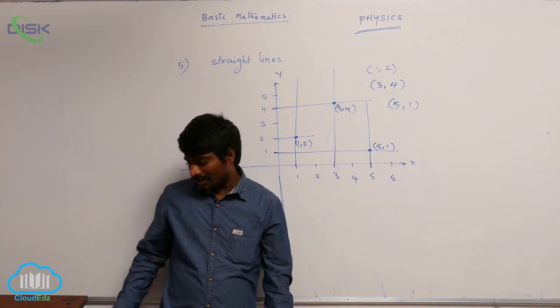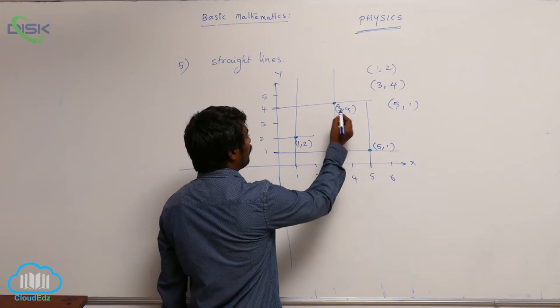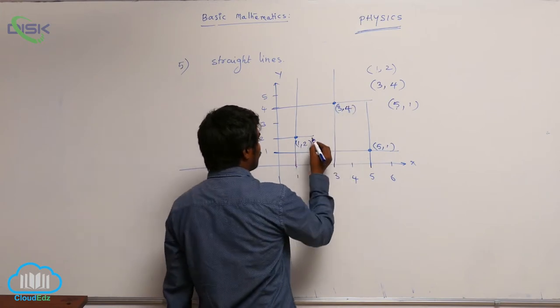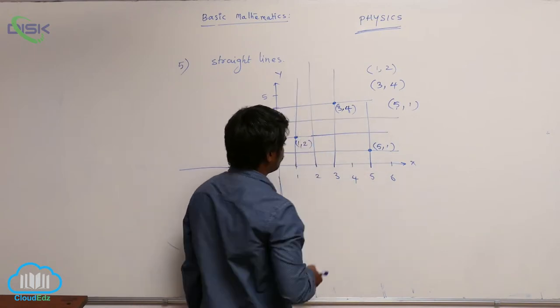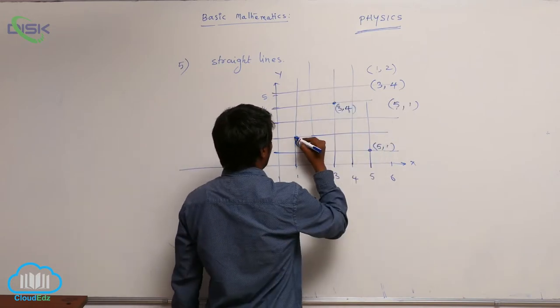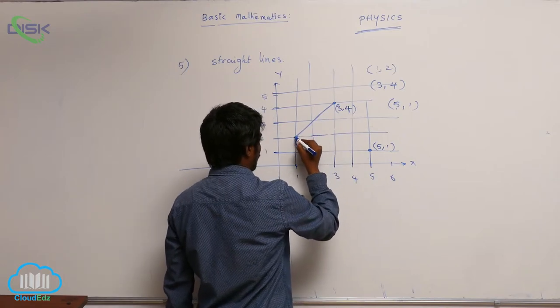Suppose if you are given two points like this: (1, 2) and (3, 4). I am joining these two points with a line.